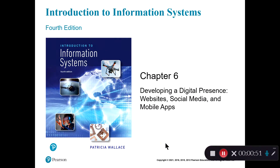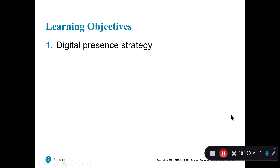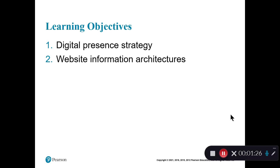Some of the things we're going to learn this week: the author starts off with a digital presence strategy — the keyword there is strategy. You need to think about what you're trying to accomplish with your website. As the chapter goes through, you'll see there are a number of different focuses you can have, whether it's entertainment, information, or providing products, but you need to decide that first.